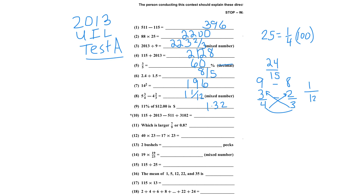Number 10 is a star problem, which is an approximation. I'm going to round off to the nearest hundreds: 100 plus 2000 minus 500 plus 31. So 100 minus 500 is negative 400, and 31 minus 4 is 27, plus 2000 is 4700. That's an approximation, so I put it in red because it doesn't have to be exact.